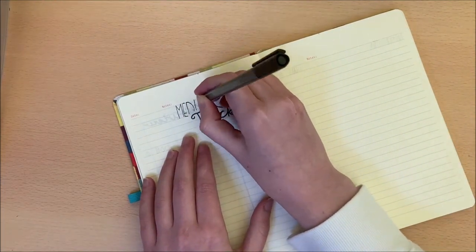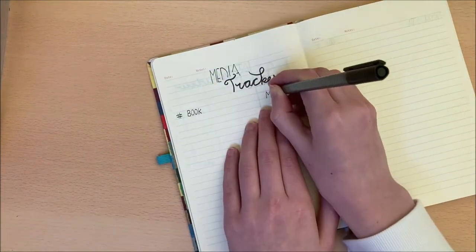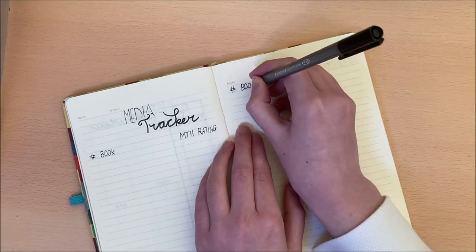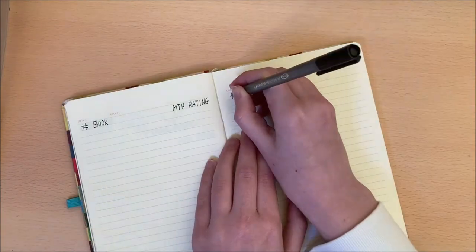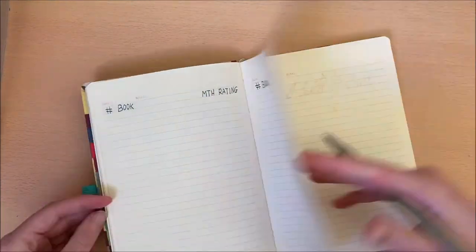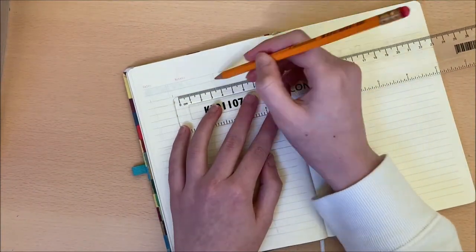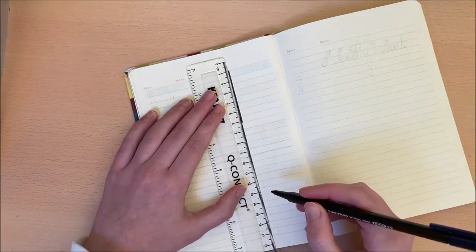Next up is a media tracker. This is a place for me to list all the books and movies that I've seen or watched this year. So I've included quite a lot of pages for books because I tend to read a lot and then I have one page at the end for movies or TV shows that I particularly enjoyed.